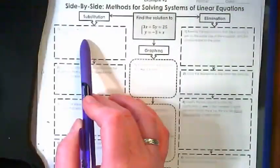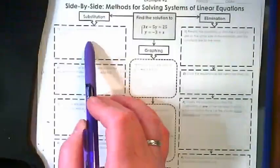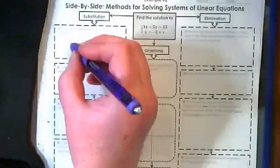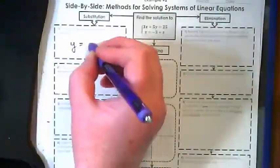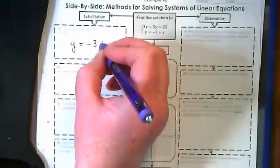This says choose an equation and isolate, or solve for a variable. The second equation is already solved for a variable.